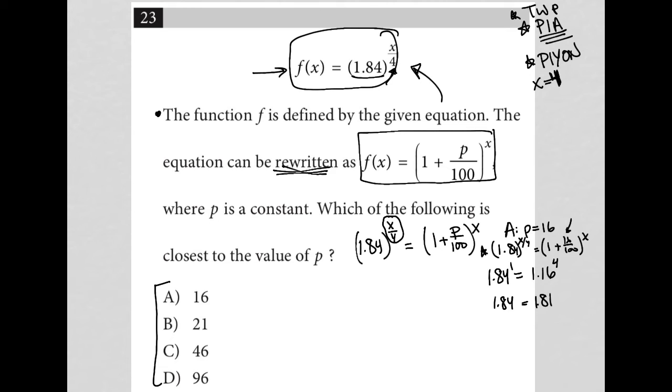Now, the question does say which of these is closest to the value of p. So this is fairly close. 1.84 and 1.81 are very close to each other. So I kind of like choice A as an answer. But I'll try choice B and just see what's happening with it.